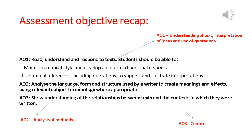And then finally, assessment objective three is your ability to show understanding of the relationships between the texts and their contexts. So that means you've got to show understanding of either the time that the poem was written in or some of the influences on the poet when they were writing their poem.